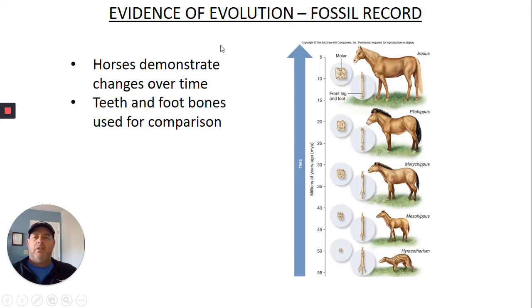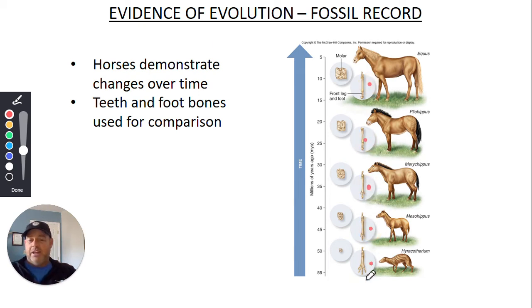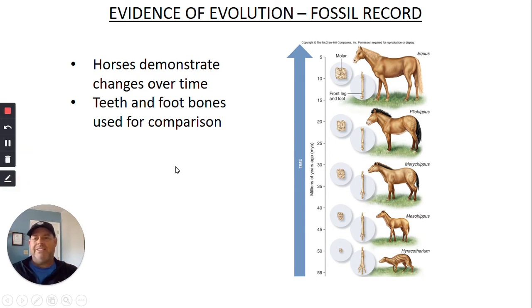So a little bit more about the fossil record. Horses demonstrate a lot of change over time. Teeth and foot bones are also used. So if you look at some of these things, like this is actually down here, this guy down here, that's what an older horse would have looked like, many years ago, what a horse would have looked like. And gradually their legs got longer and longer and they got more sturdy. And now we have something that looks like this, which is kind of what we're all used to seeing. But look at the teeth here, and all of these bubbles, they show you the teeth and how they've changed shape.